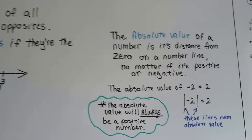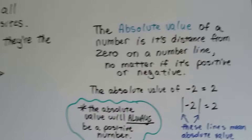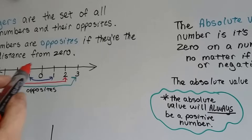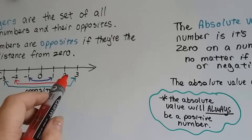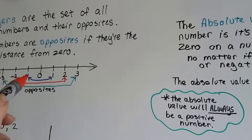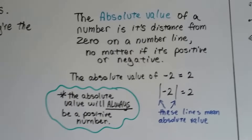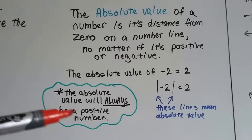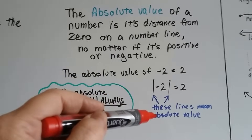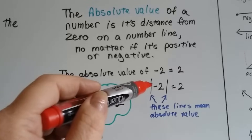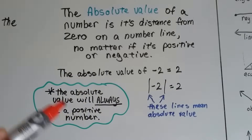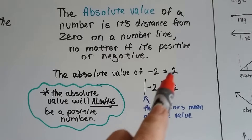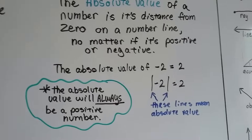An absolute value is the distance a number is from zero on a number line. So the absolute value of negative three is three because it's three away from zero. The absolute value of positive two is two because it's two away from zero. The absolute value of negative 99 is 99 — it's 99 spaces away from zero — and it ends up always being a positive number. When you see these lines, that means absolute value. What we do is take the lines off, take away the negative sign, and make it positive because absolute value will always be a positive number.